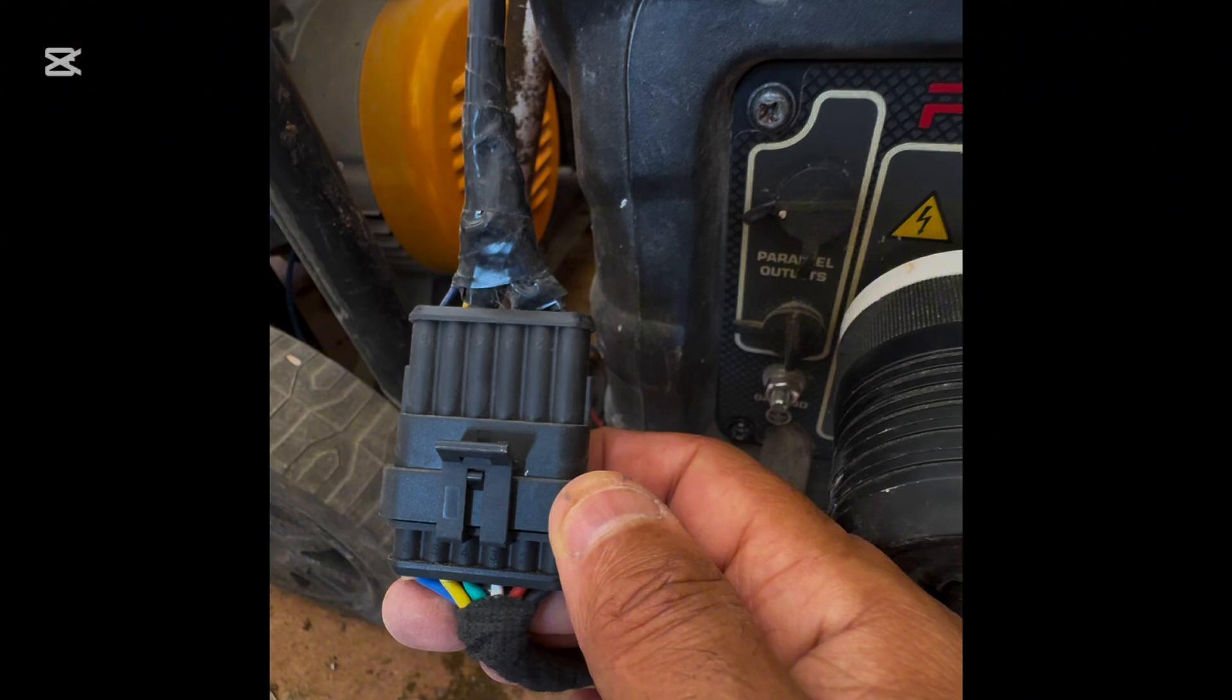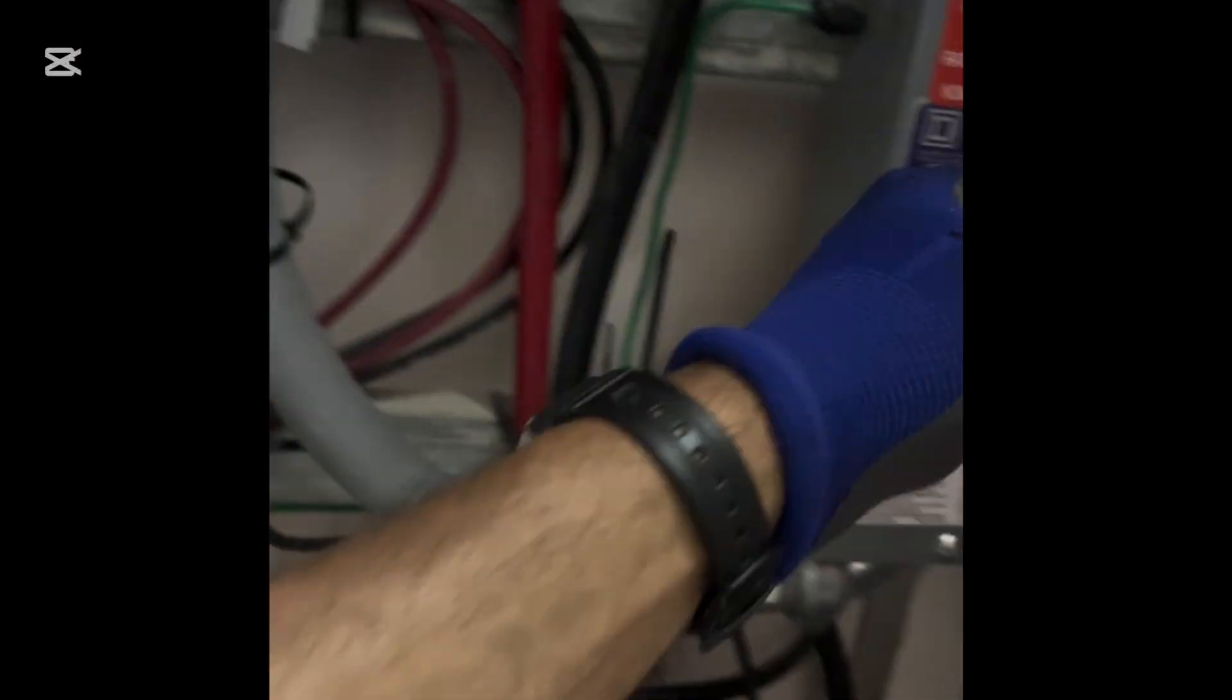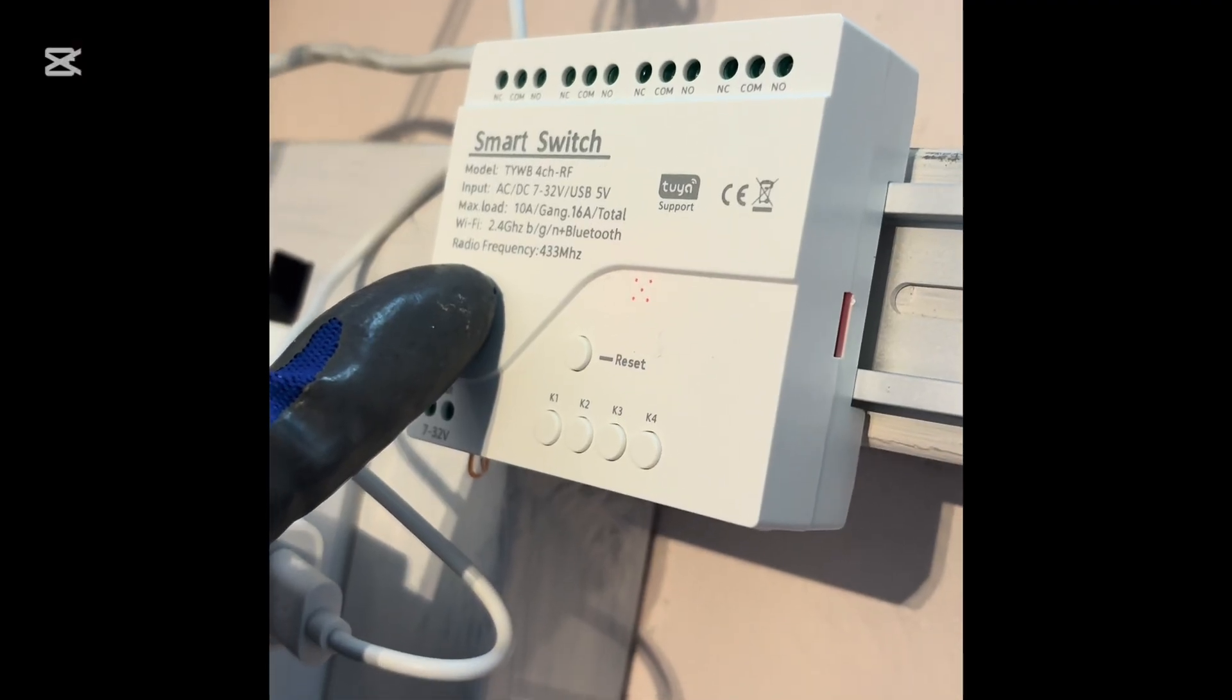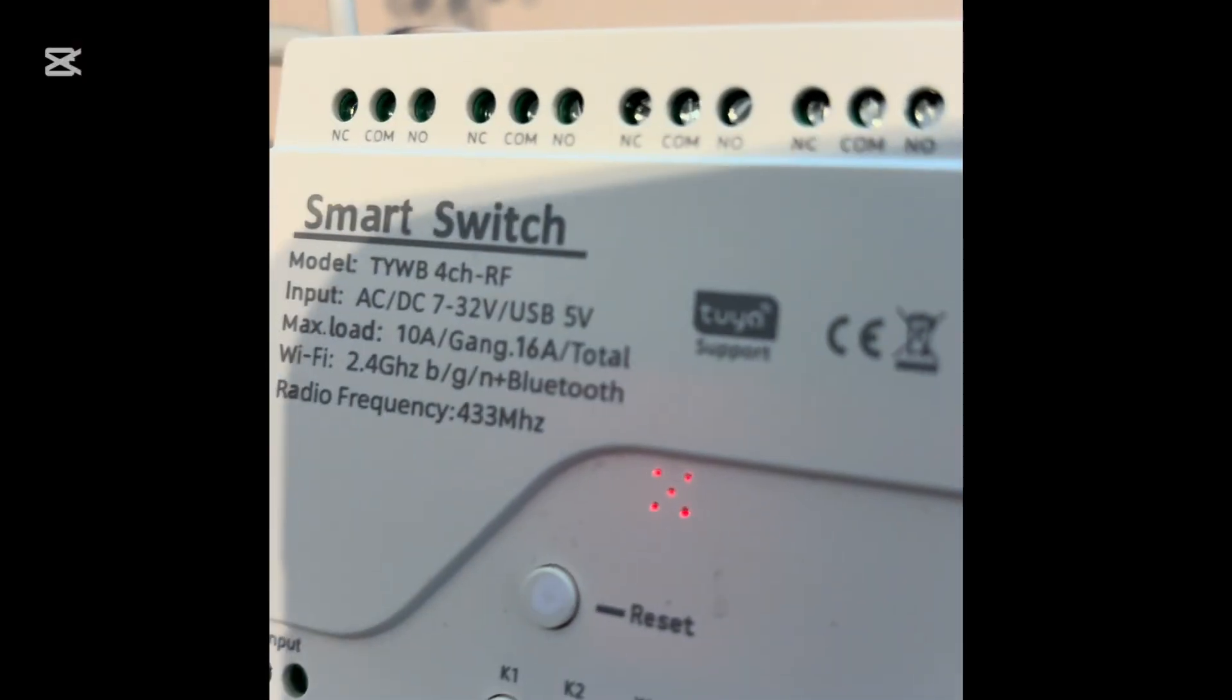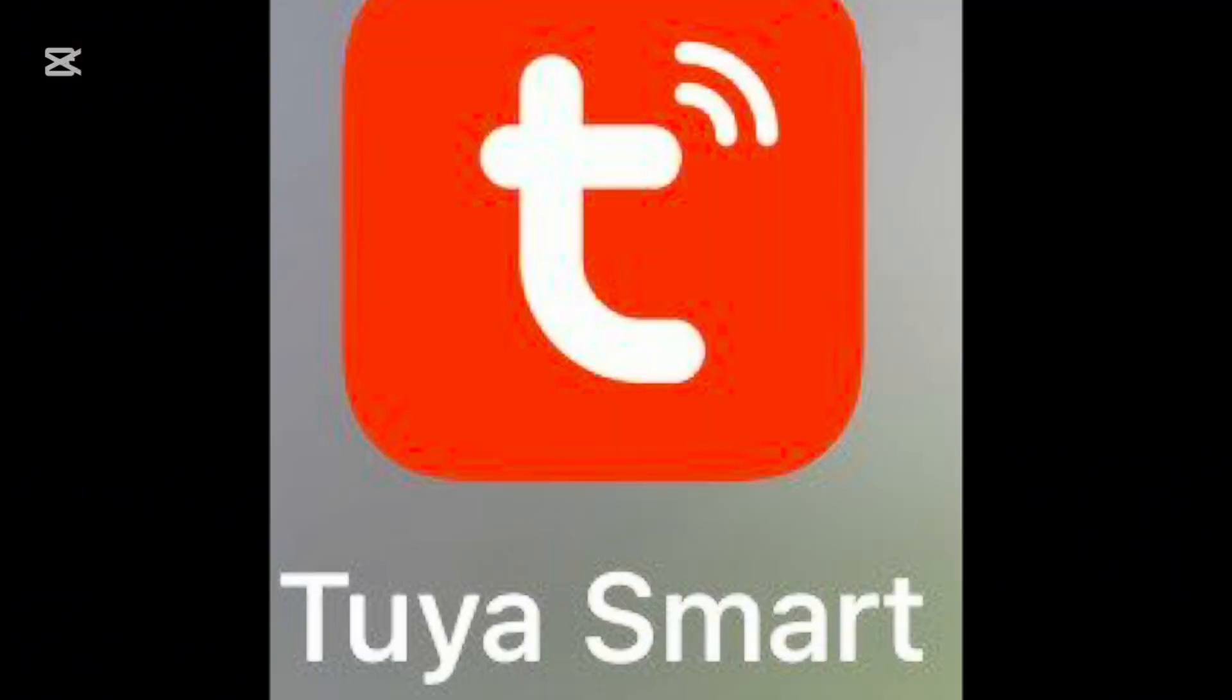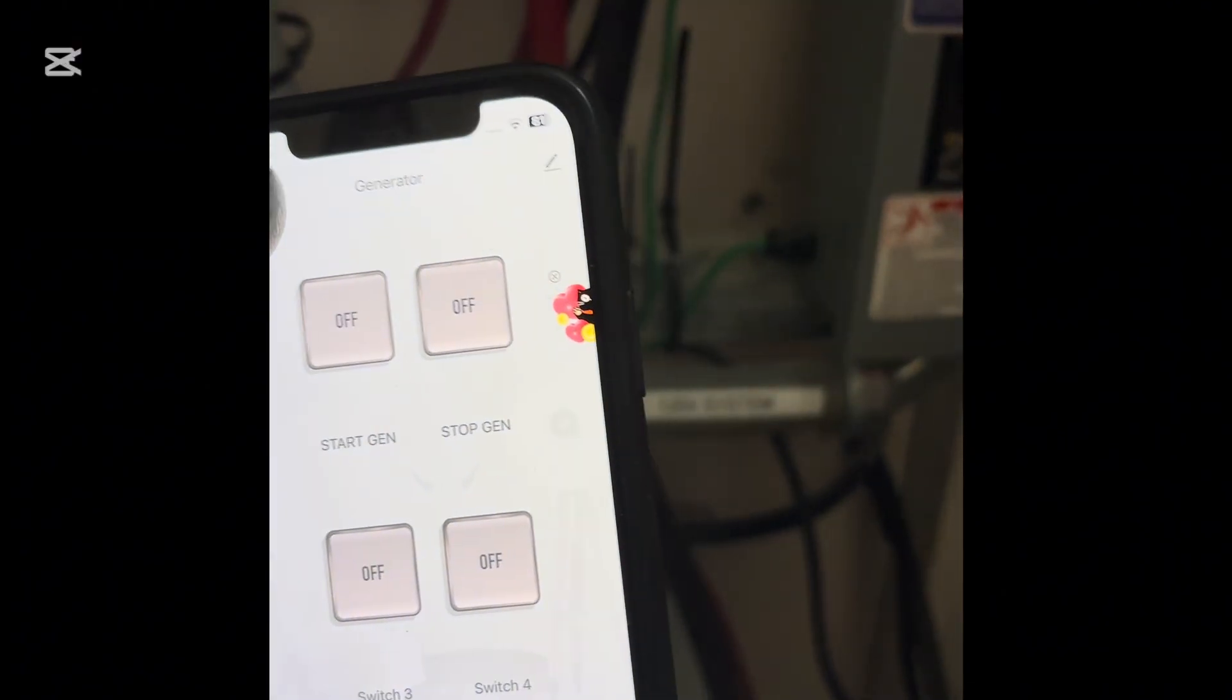In parallel to that, I took the dry contacts here and I split them and added another bypass for the dry contacts connected to a Wi-Fi internet-based smart switch. It's by Tuya and you download the app. This is what the app looks like, it's called Tuya Smart, and then you have the generator start and stop.